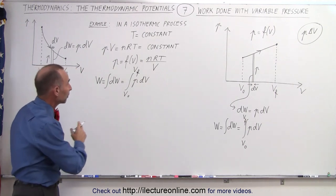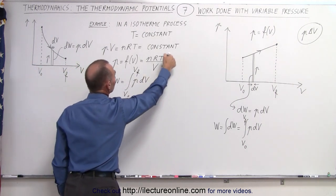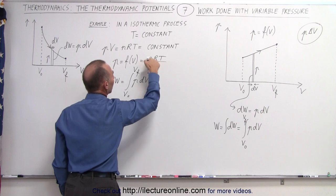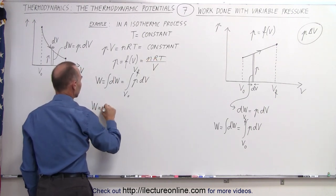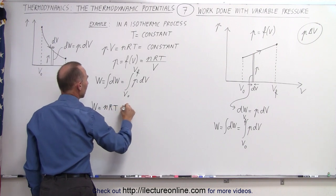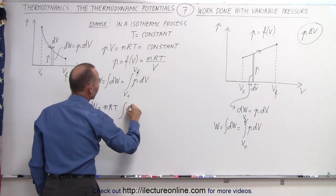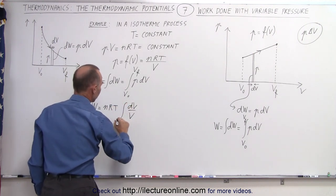Now we know that in an isothermic process, the function pressure is equal to nRT over V. Since nRT are constants, this can now be written as work is equal to nRT times the integral of dV over V from initial volume to final volume.